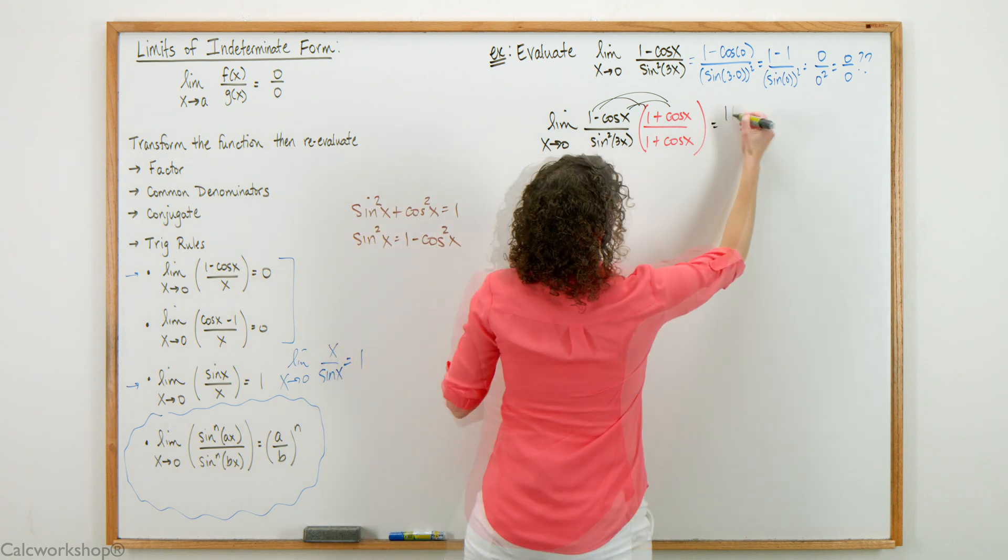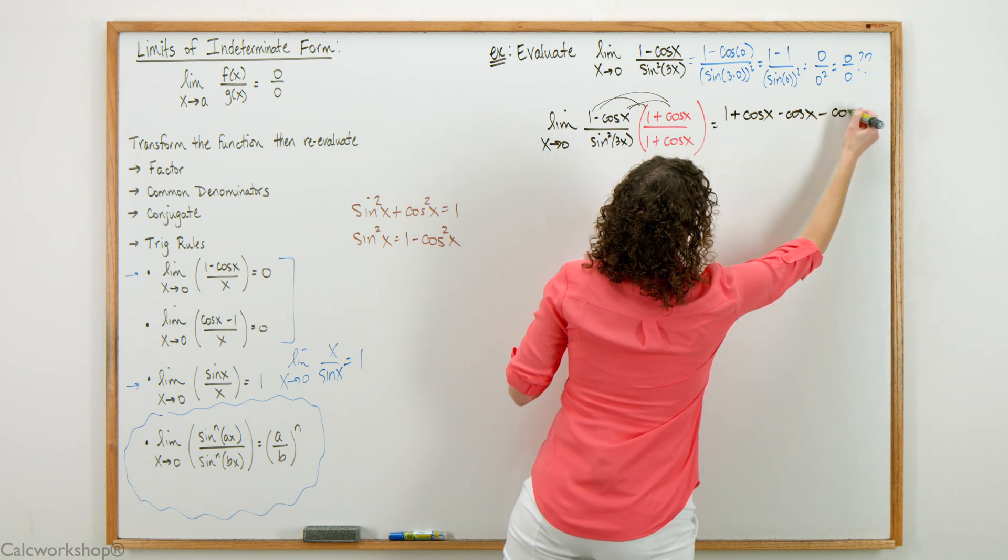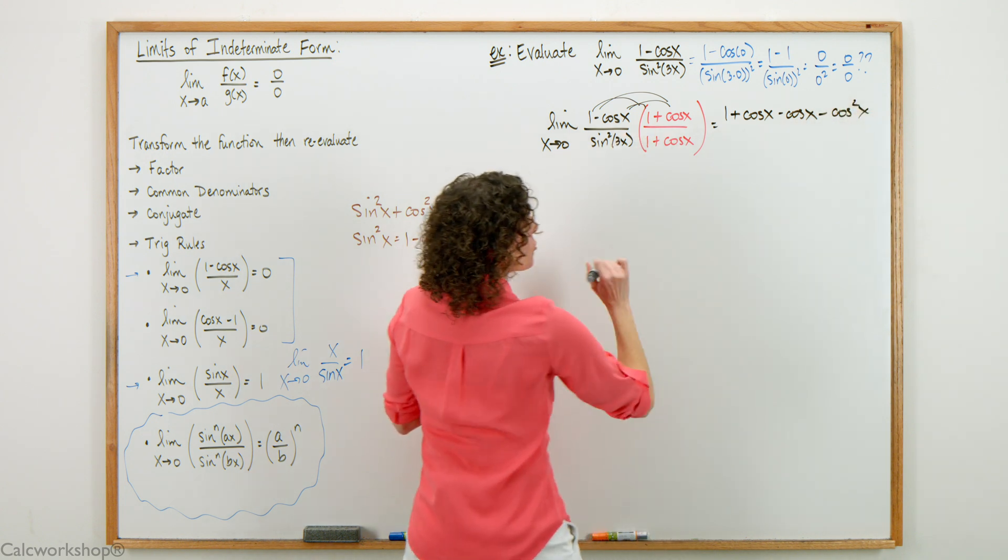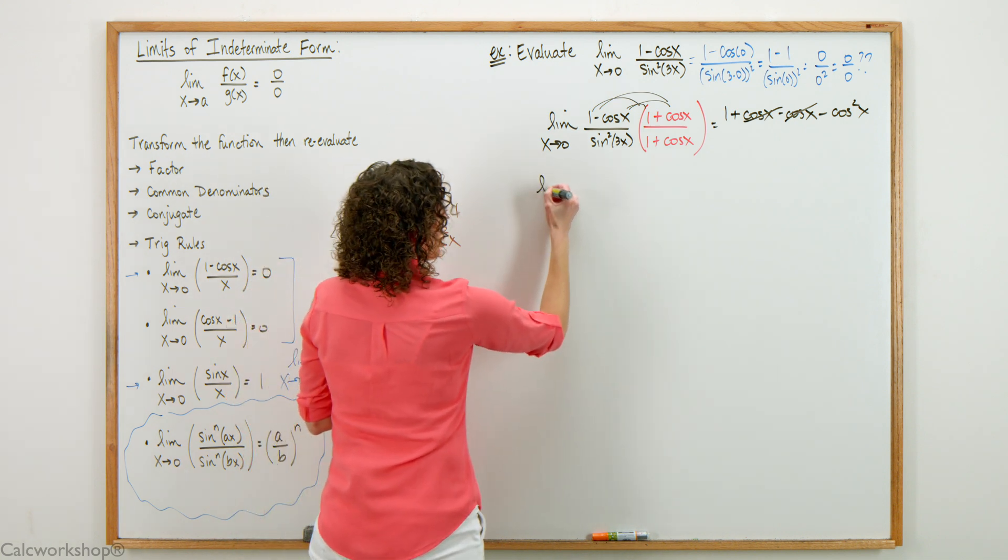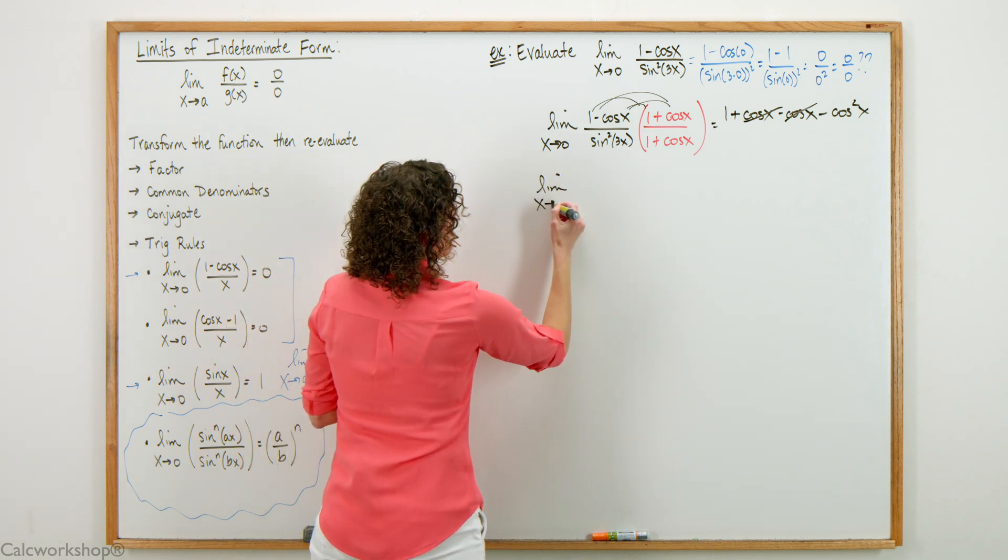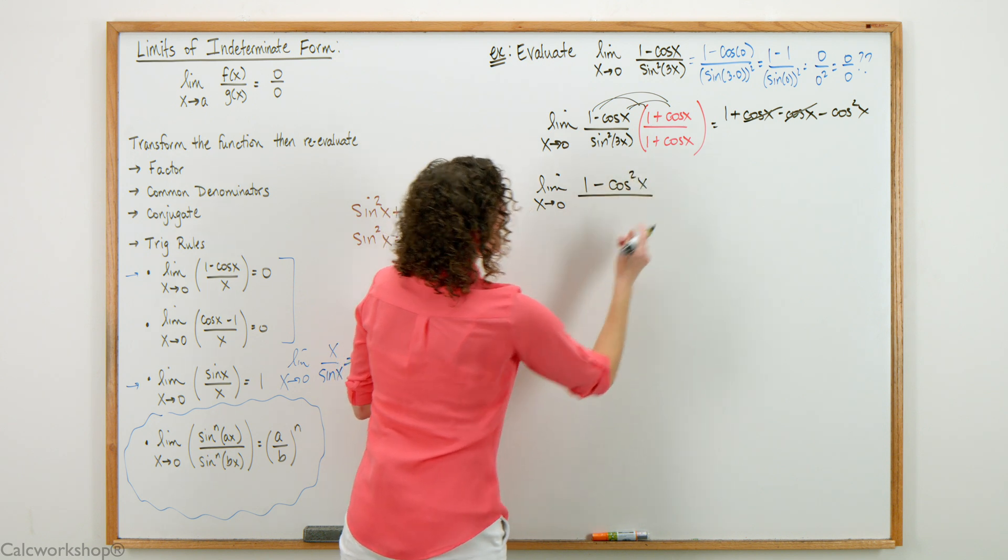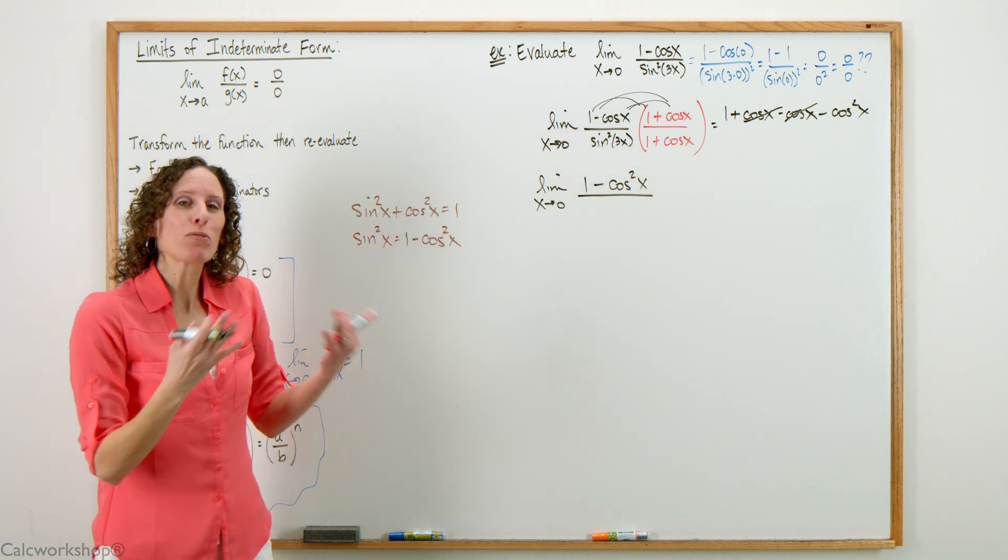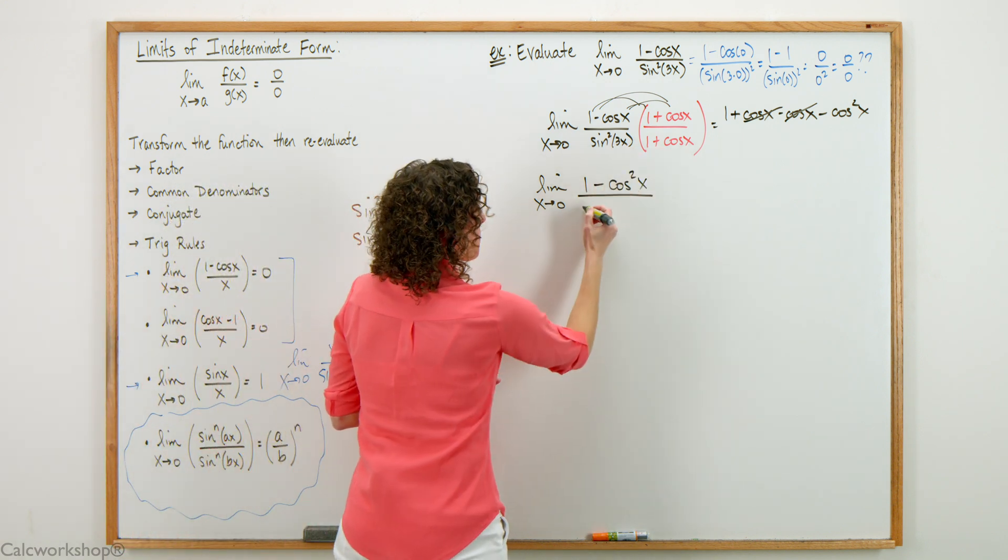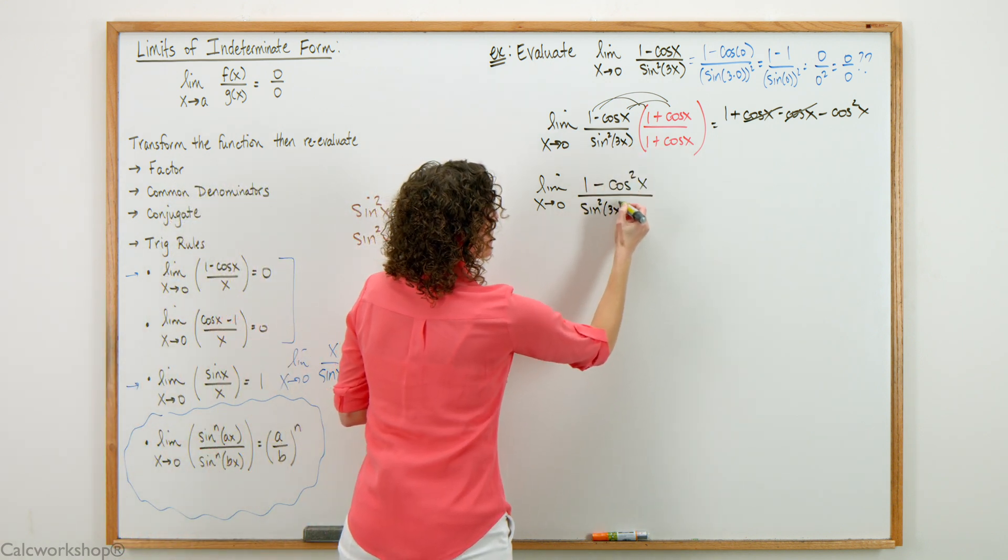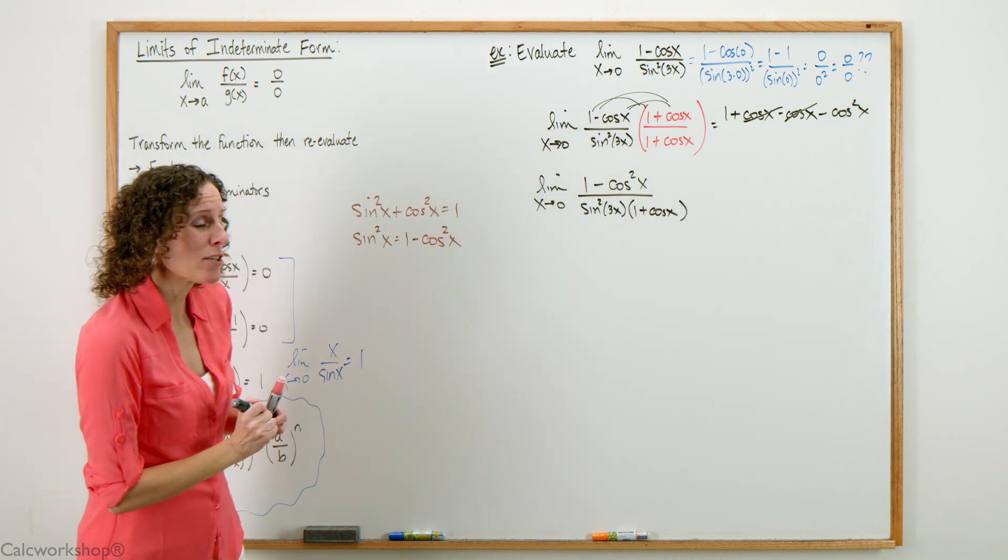If we multiply those binomials together, this becomes 1 plus cosine x minus cosine x minus cosine squared x. If I distribute, the cosine and negative cosine cross out, so our numerator gets simplified to 1 minus cosine squared of x. On the bottom, I'm only multiplying the conjugate pair, so it's sine squared of 3x times 1 plus cosine x.